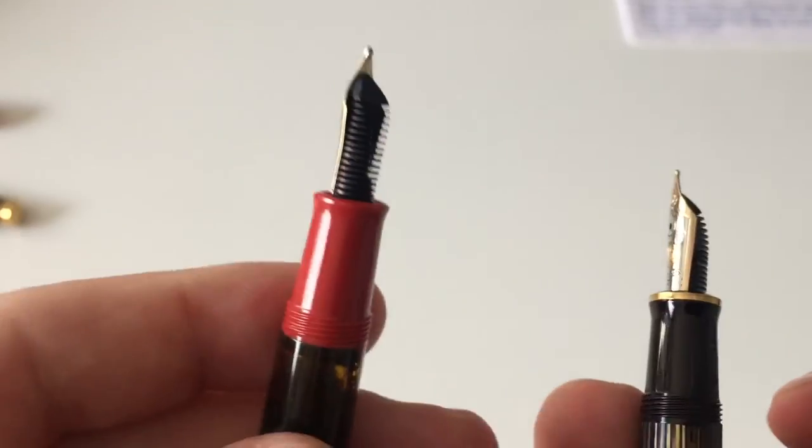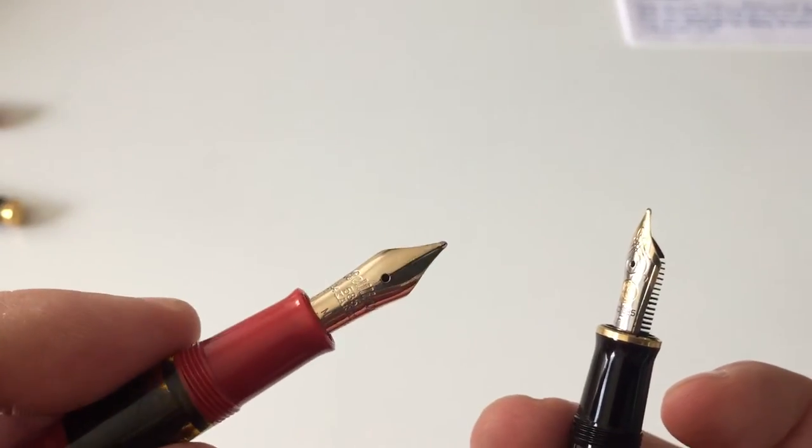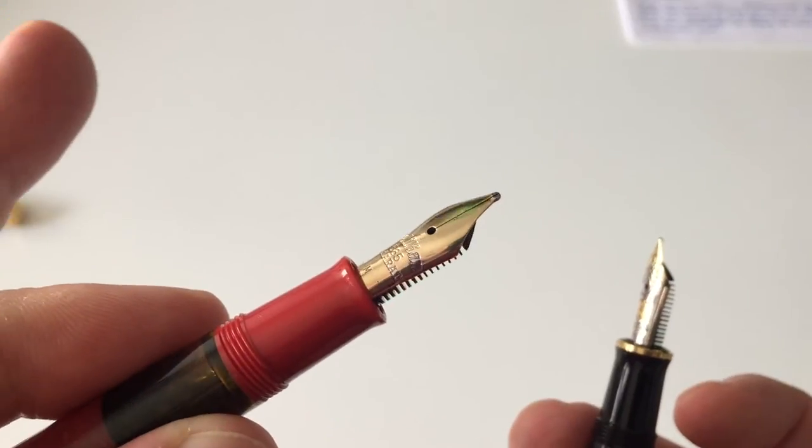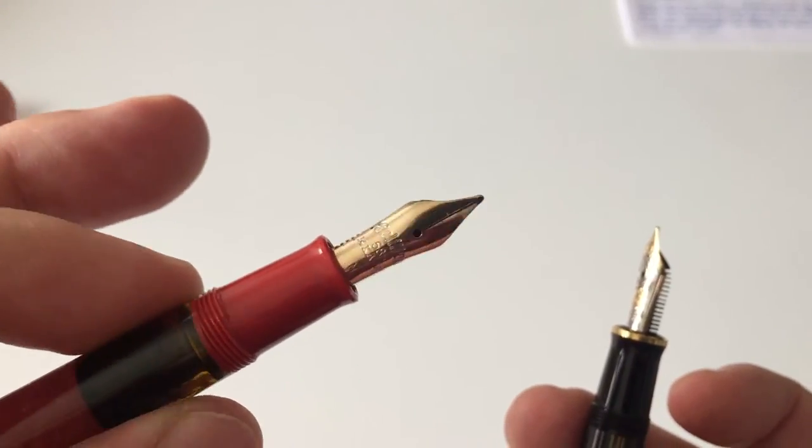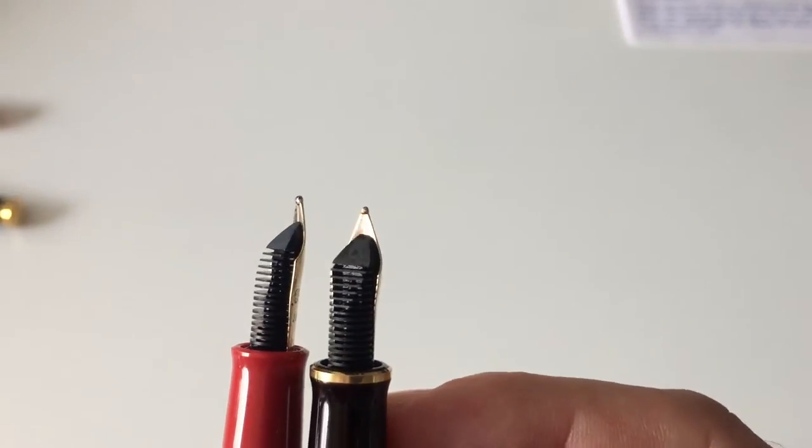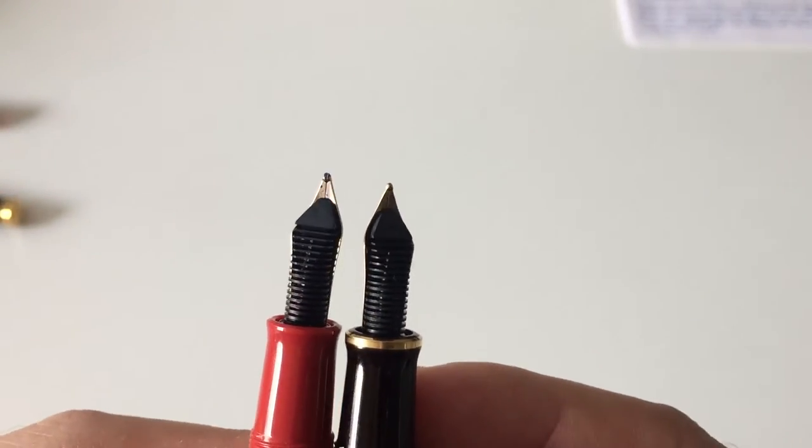It looks as if the tipping is slightly different, but I'm not sure. What's interesting about this pen is that it has quite some stub nib characteristics. I don't know whether this is just my review sample that is like that. I'm going to show you that in a minute when we do the writing sample. Then down here you have the feed, and the feed looks pretty much exactly the same on the M101N and the M400.